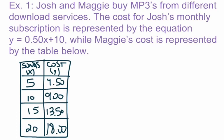For both functions — the equation representing Josh and the table representing Maggie — we want to identify both the slope and the y-intercept, and then compare them. We'll also ask one more additional question to wrap up the problem. Out of the four ways of representing a function — equation, table, graph, and verbal description — the easiest way to identify slope and y-intercept should be from an equation.